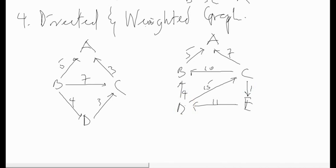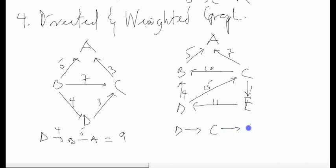For example, if we are moving from D to A via B, the path D to B is 4 and B to A is 5, giving a total weight of 9. For another path, moving from D to C then C to A: D to C is 15 and C to A is 7, giving a total weight of 22. The path D to B to A gives 4 plus 5, which equals 9.